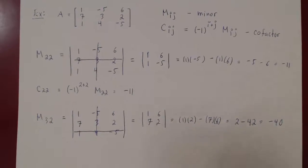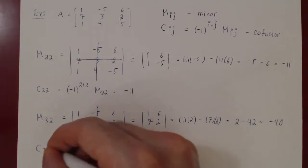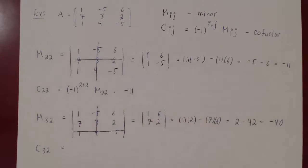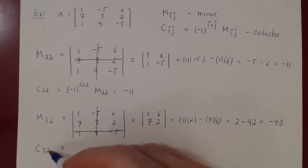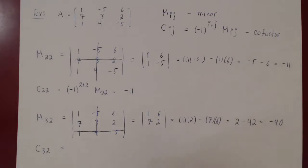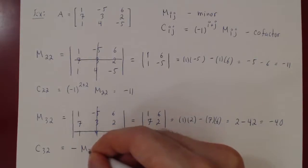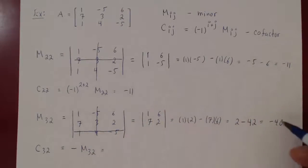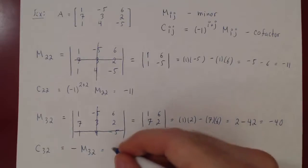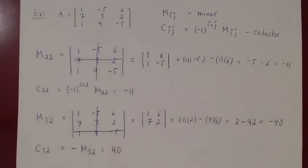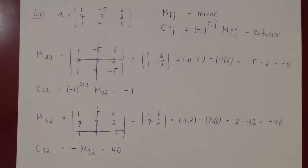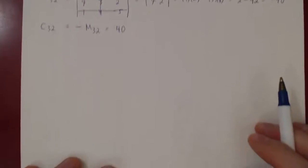The corresponding cofactor C32 is negative 1 to the power 3 plus 2, which is 5. Negative 1 to the 5th is negative 1, so C32 is the negative of the minor M32. Negative of negative 40 is positive 40. This is the concept of the minor and cofactor of a matrix. From this, we can now define the determinant of any square matrix.